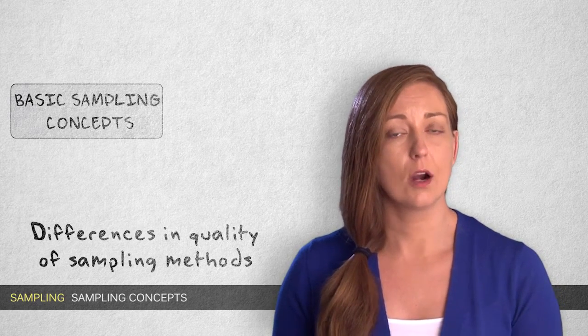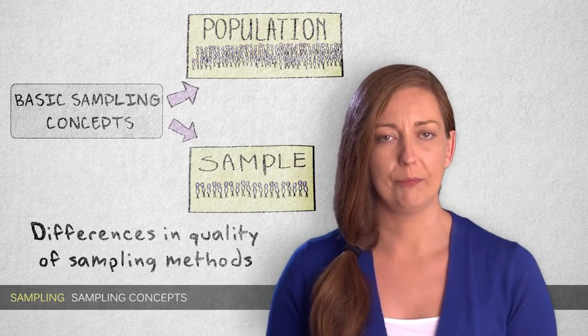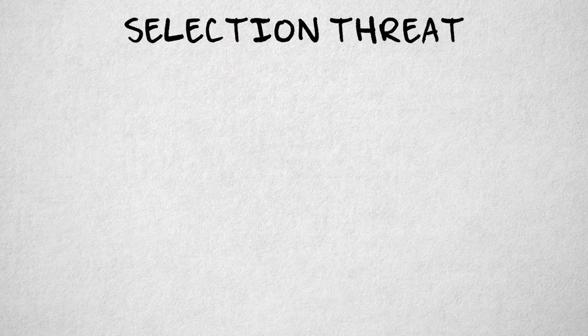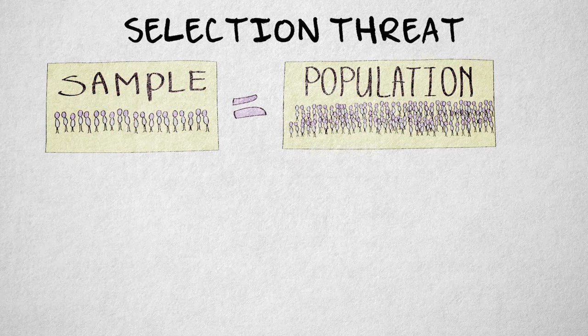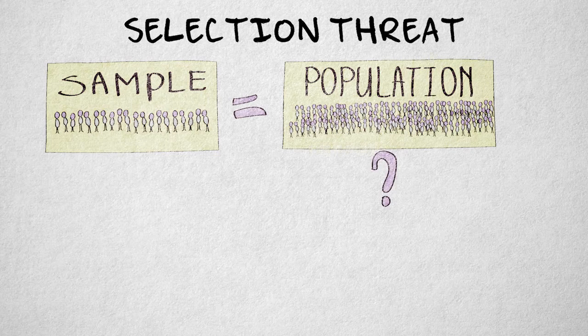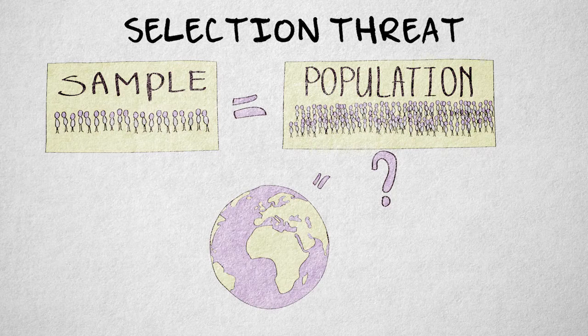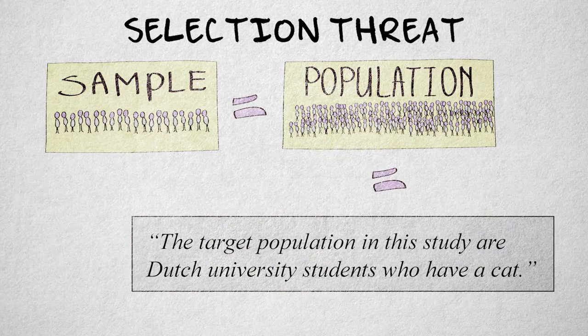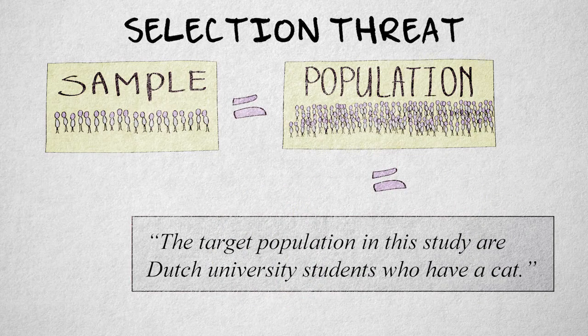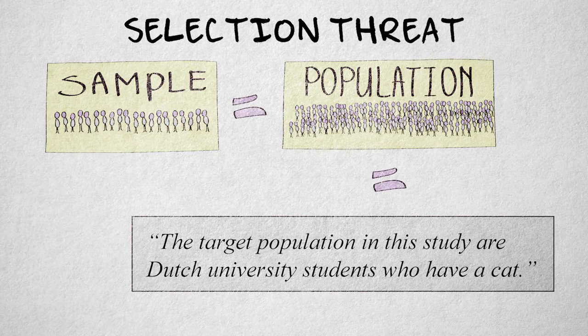The two most important concepts are population and sample. The selection threat concerns the generalization of findings to other persons. Exactly what other persons are we referring to? All people in the entire world, or just people in our country or culture? Researchers should anticipate this question by defining their target population explicitly. The term population refers to the entire collection of people or groups to whom the hypothesis is supposed to apply.